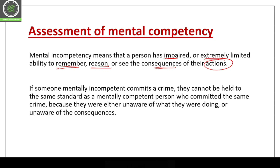If a mentally incompetent person commits a crime, they cannot be held to the same standard as a mentally competent person. A mentally ill person may be unaware of what they were doing — they don't know their actions are illegal or against the law. A mentally competent person committing murder would know they face jail and that the activity is illegal, but a mentally ill person does not understand these things.